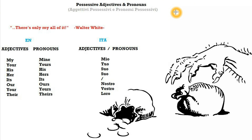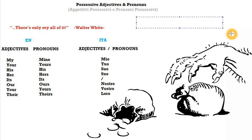Hello boys and girls, my name is Claudio and it's time for another Italian tutorial: possessive adjectives and pronouns — aggettivi possessivi e pronomi possessivi. This is what they are in English. Now let's have a look at the difference between an adjective and a pronoun.